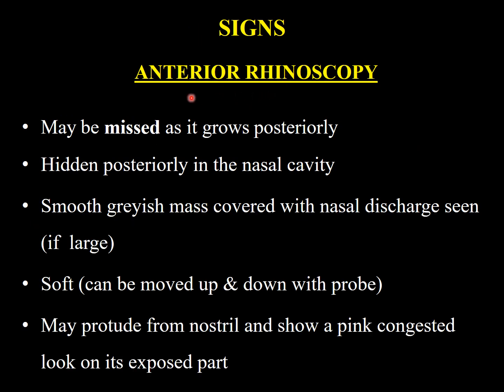On anterior rhinoscopy, this polyp can be missed as it grows posteriorly initially. It is hidden posteriorly in the nasal cavity. A smooth grayish mass covered with nasal discharge may be visible if it is enlarged. It is soft and can be moved up and down with the probe, confirming that polyps are mobile.